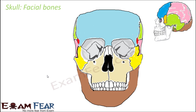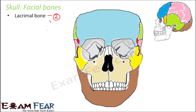Now let us look at the facial bones — the set of bones which form the front portion of the skull. The first one is the lacrimal bone, the smallest bone present on the face. It is located behind and lateral to the nasal bone, visible from the side view. There are two lacrimal bones, one on each side.